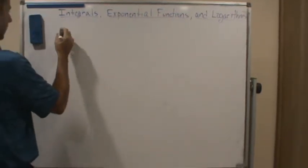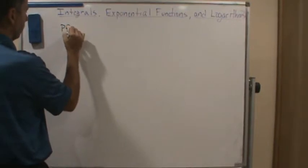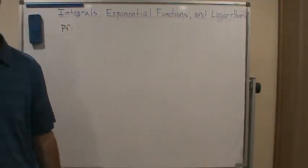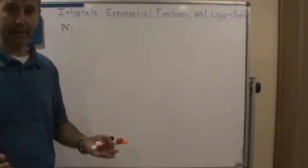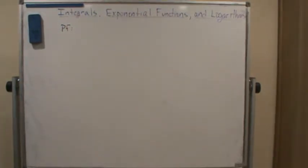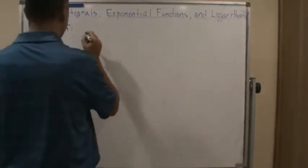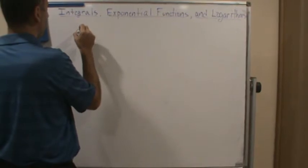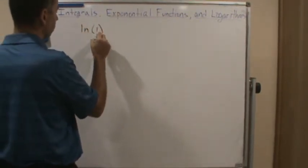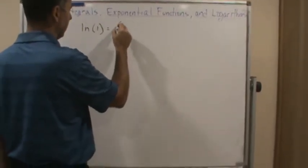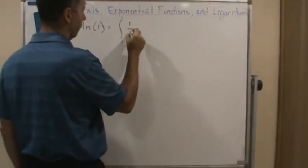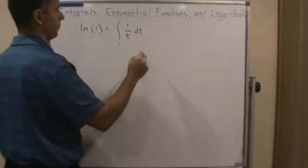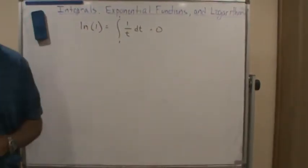The first property is that the natural log of one is zero. That one is pretty clear — it's defined to be that way, so it's straightforward. We defined the natural log of one to be zero by definition: the natural log of one equals the integral from one to one of (1/t) dt, which is defined to be equal to zero.